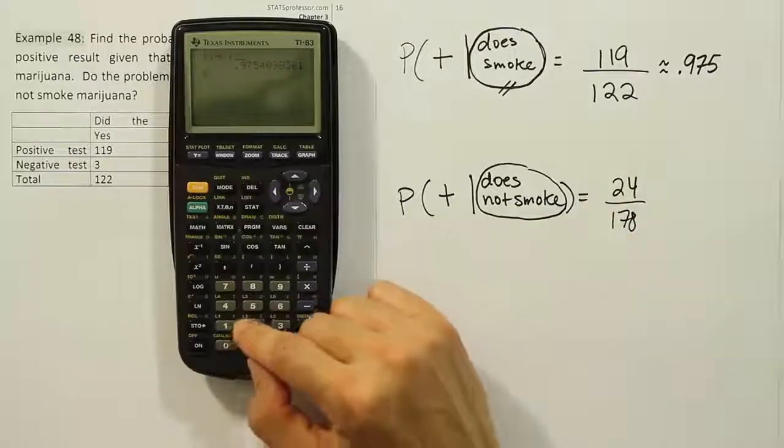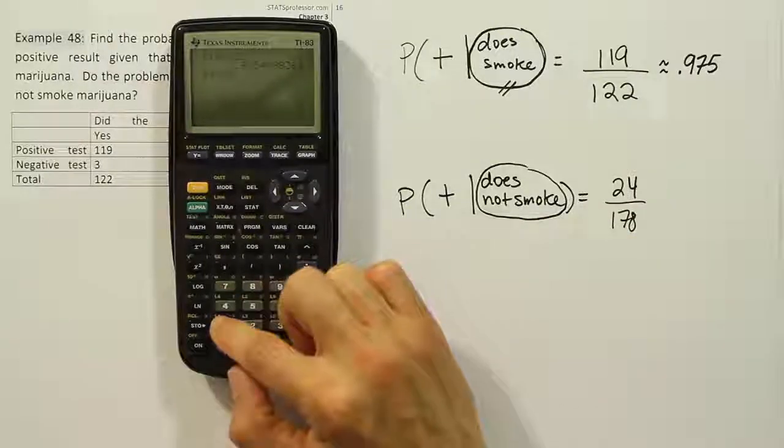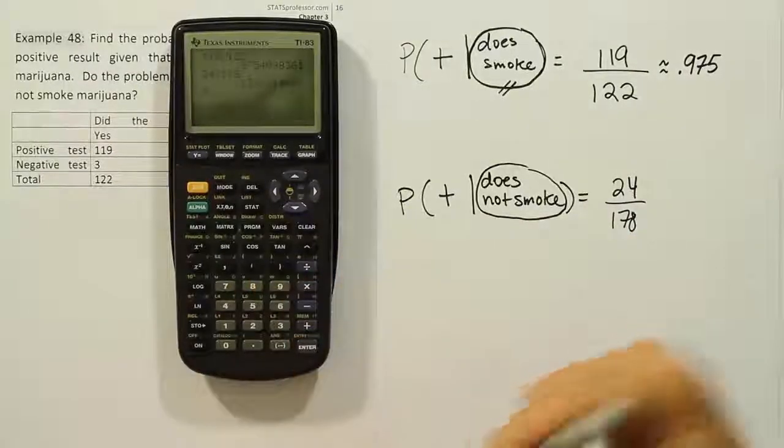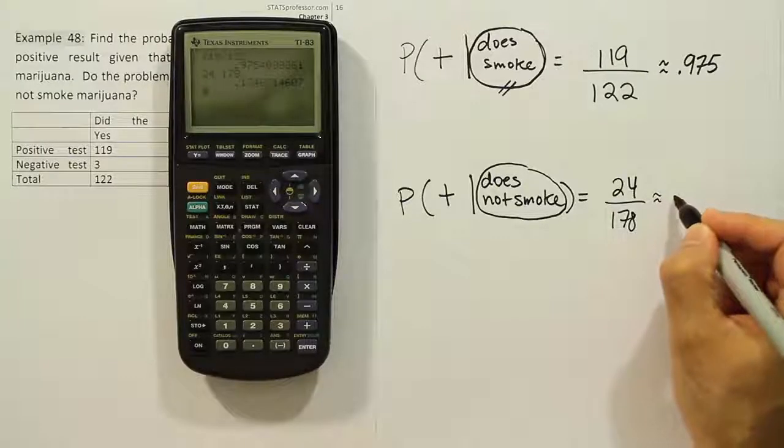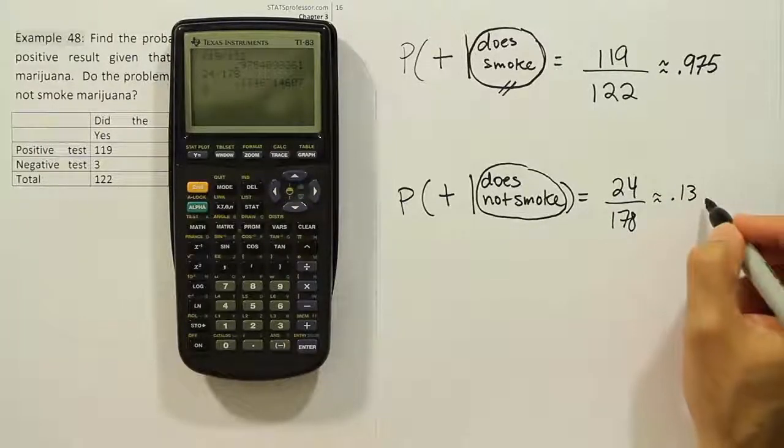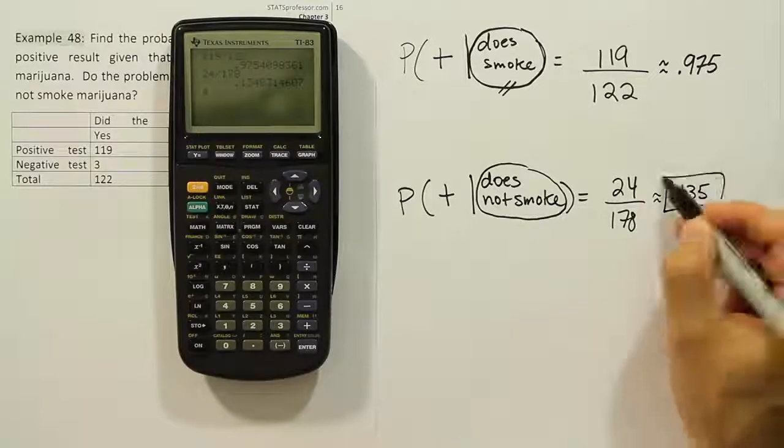Let's look at the other one. The other one, 24 divided by 178, that produces an answer of 13.5%. That's a terrible result.